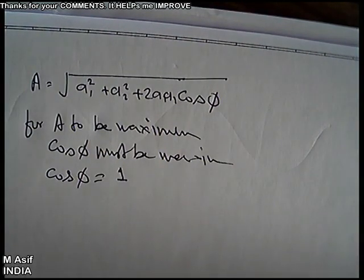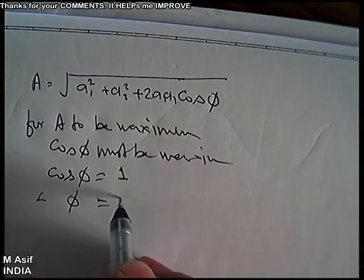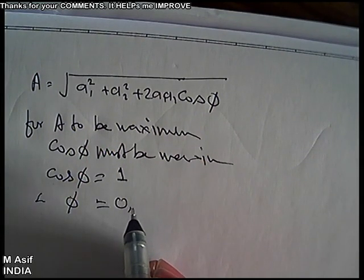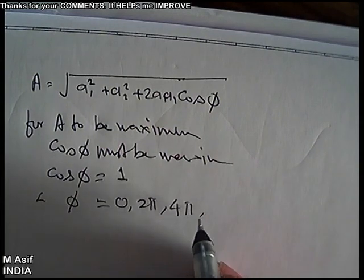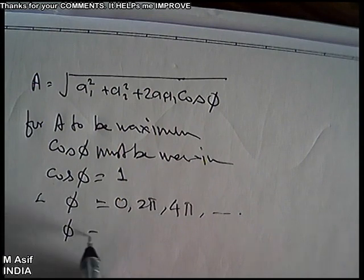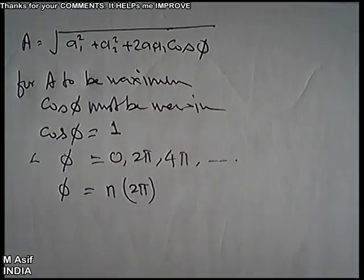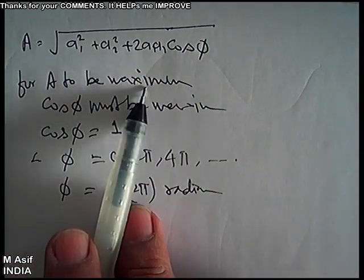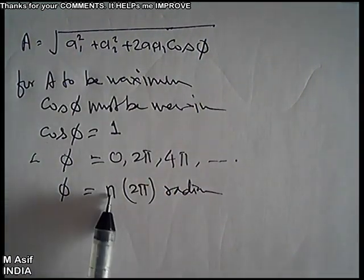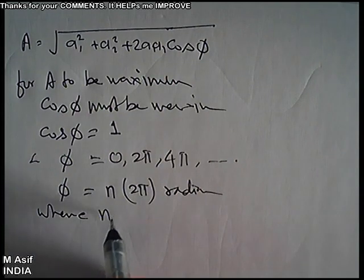The maximum value of cosθ is 1. This is possible when φ equals 0, 2π, 4π, and so on — that is, φ must be an integral multiple of 2π. So mathematically, for maxima to form, the phase difference between the superimposing waves must necessarily be an integral multiple of 2π, where n starts from 0.